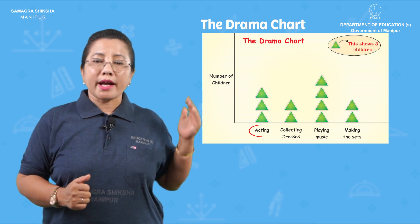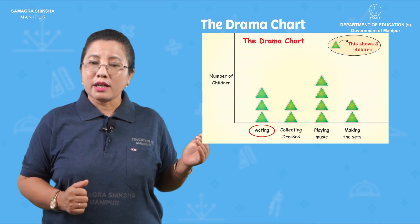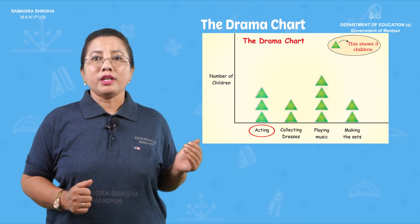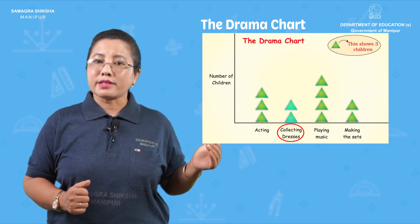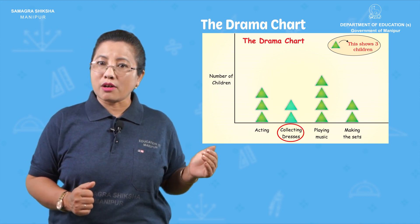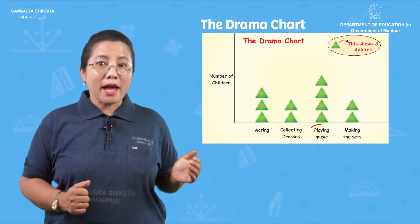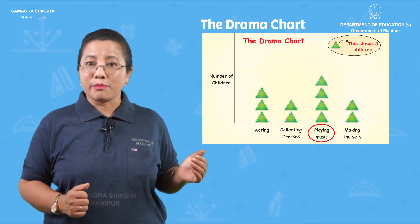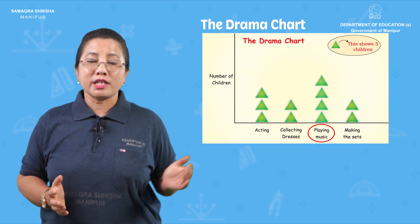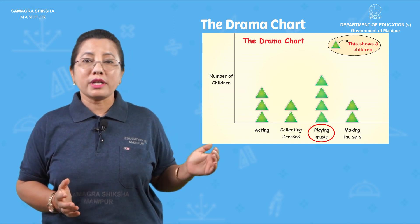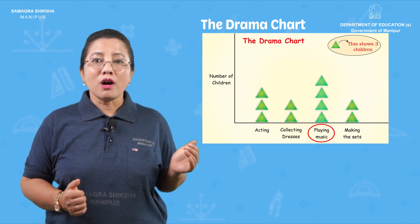How many triangles are there for acting? Three triangles. What about collecting dresses? Two triangles. Playing music — how many triangles are there? Four triangles.